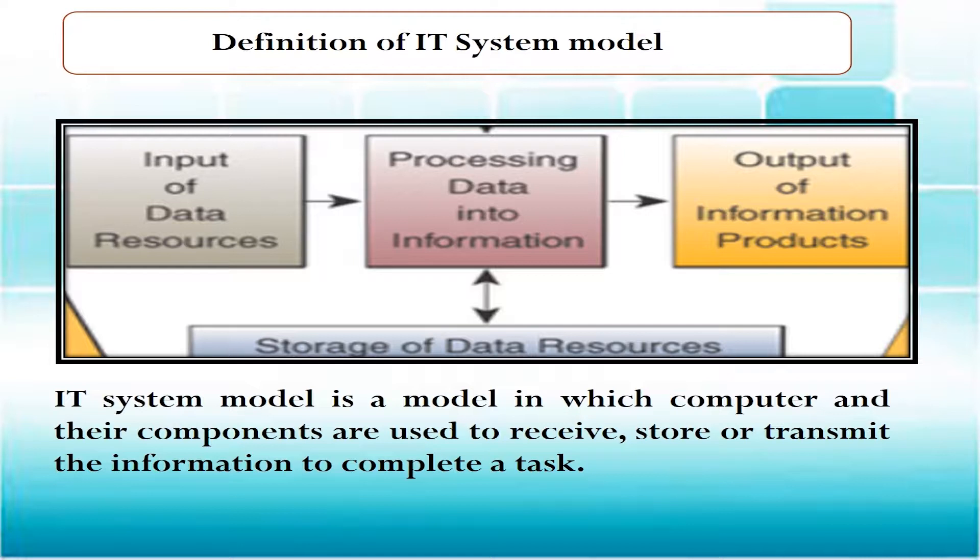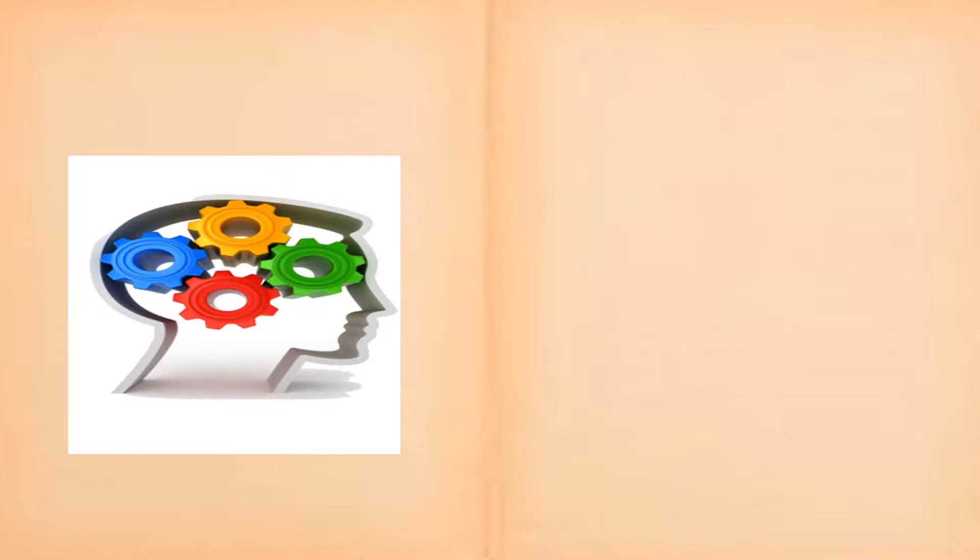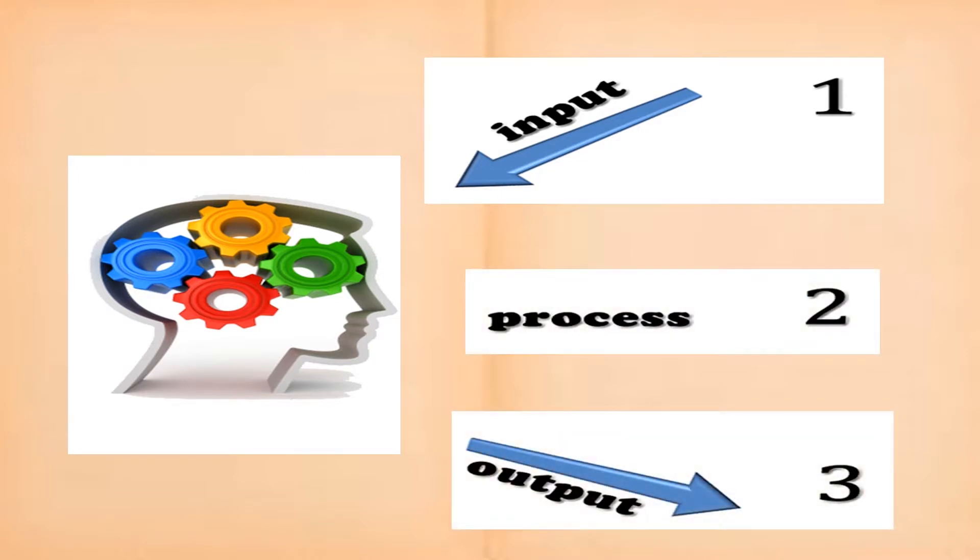The information or data given to a system by the user is termed as input. Processing of the input is done in the CPU, or the central processing unit, which is the brain of the computer. The information or data given out by the system is termed as output.